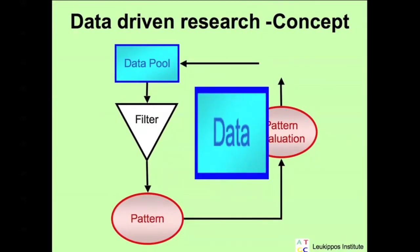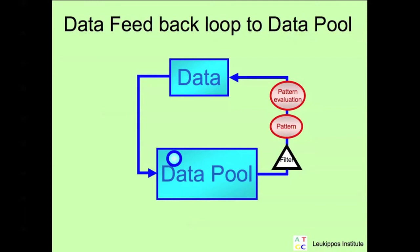Data feedback loop to the data pool. An important feature of the data-driven research approach is the feedback loop to the data pool. The data pool is permanently connected to communicating computers and the people behind these computers. These communications put the data in a context. A constant evaluation of the pattern in these networks will dynamically fill the data pool and dynamically change the pattern anatomy.